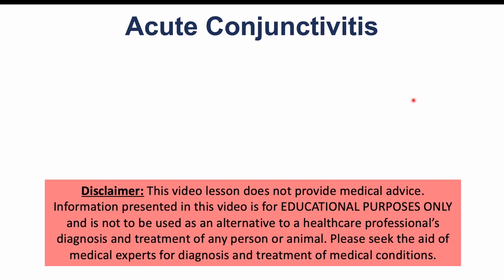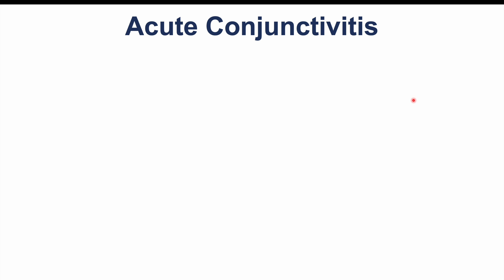This lesson is on the signs and symptoms of acute conjunctivitis, which is also called pink eye. We're going to talk about different types of conjunctivitis and the signs and symptoms that occur with each type. We'll also talk about associated medical conditions and possible complications that can occur if you have conjunctivitis.